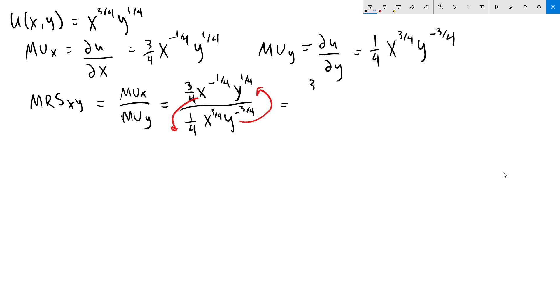What we get here is three-fourths. Now we have our y to the one-fourth, but in addition to that, we've moved our y to the three-fourths up to the top and flipped the sign of our exponent. On the bottom, one-fourth, x to the three-fourths. Now we've moved our x to the one-fourth down there.